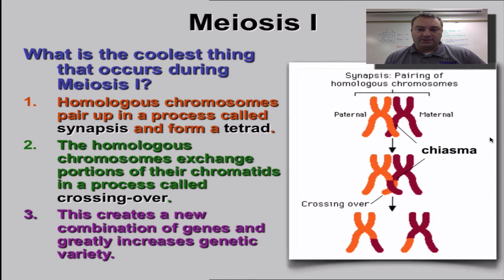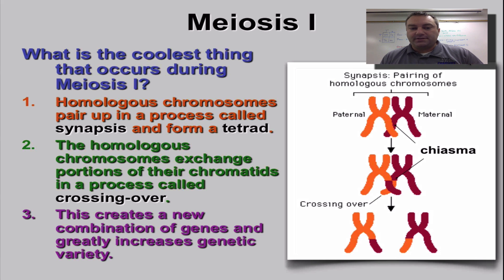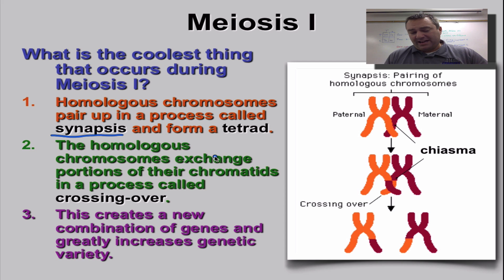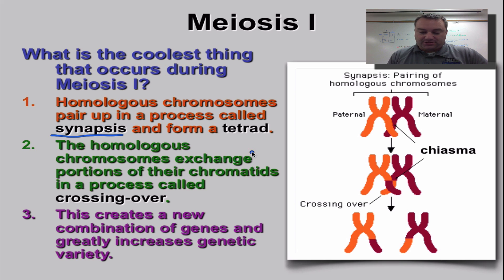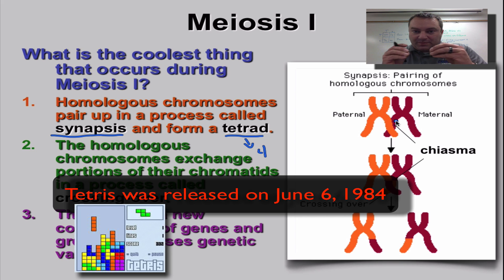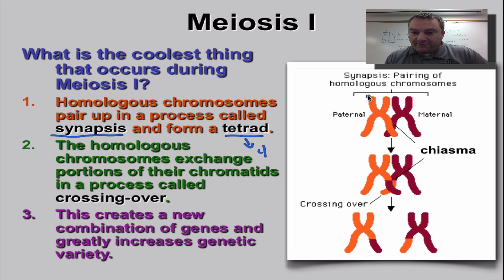Let's look at crossing over in a little more detail. The coolest thing that happens during meiosis number one is the process of crossing over. When crossing over occurs, we're going to do a process called synapsis, where your homologous chromosomes are going to pair up. The replicated chromosome from dad is going to pair up with this homologue, which came from mom, and that forms a tetrad. The root word tetrad equals four — think of the game Tetris, where the biggest piece has four blocks. So what we have is a tetrad with four chromatids.